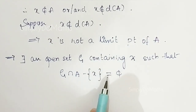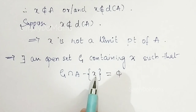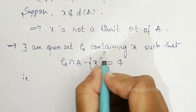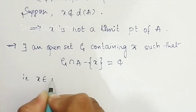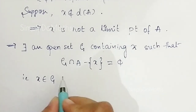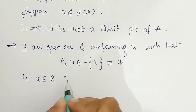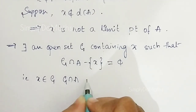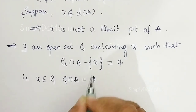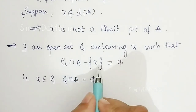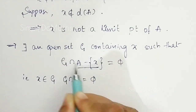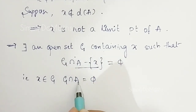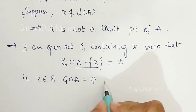That is why we consider G intersection A minus singleton set {x} equal to empty, so that x will not be a limit point of A. That is, x belongs to G where G is an open set, such that G intersection A equals empty. We can write G intersection A minus singleton set {x} as G intersection A itself. Call this Equation 1.